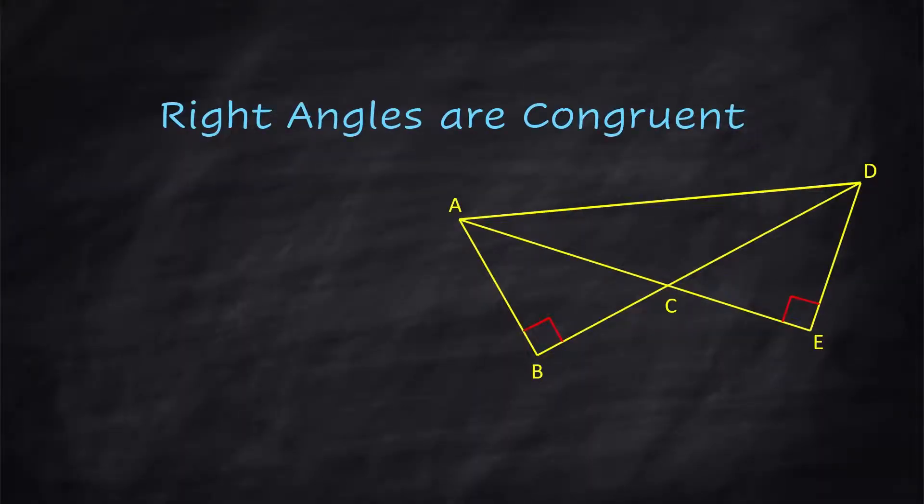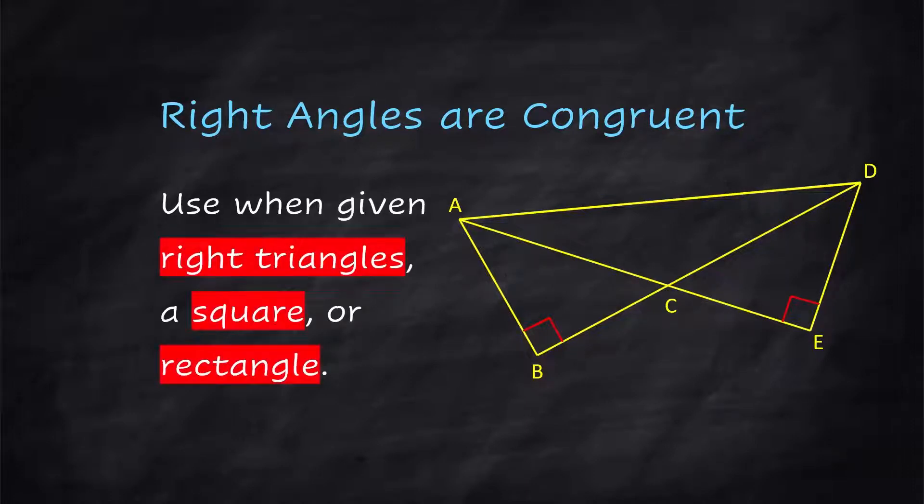Right angles are congruent. All right angles are congruent because the measure of an angle that's a right angle is 90 degrees. So you're going to look for this one whenever you're given right triangles or a square or a rectangle, because all of those figures are going to have 90 degree angles in them.